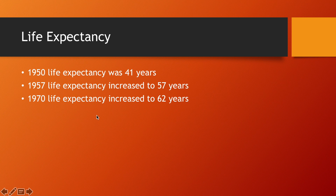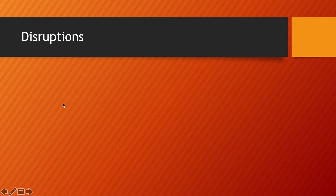Some questions might ask you about social policies from 1949 to 1957, because they want to avoid disruptions like the Great Leap Forward, the Famine, and the Cultural Revolution. So if your question is from 1949 to 1957, use this statistic. If your question covers the whole date range, then use the 1970 statistic. Speaking of disruptions, what were these disruptions?